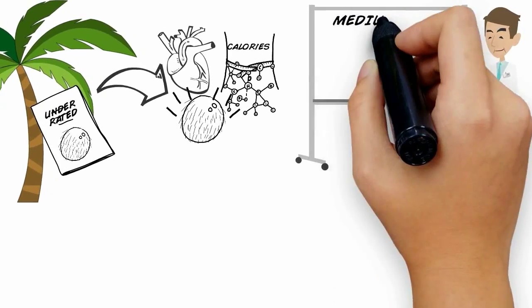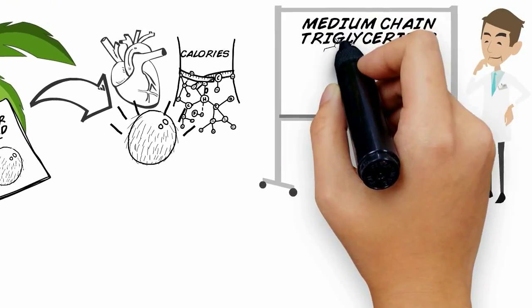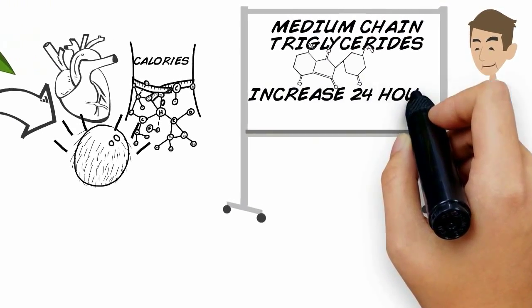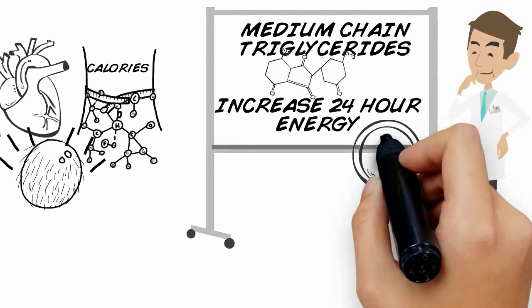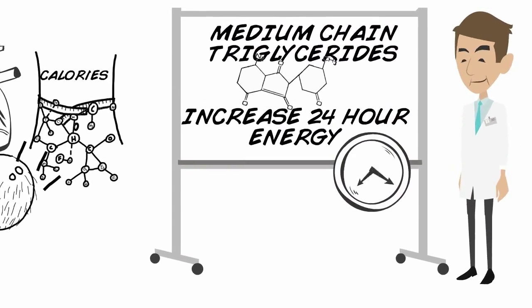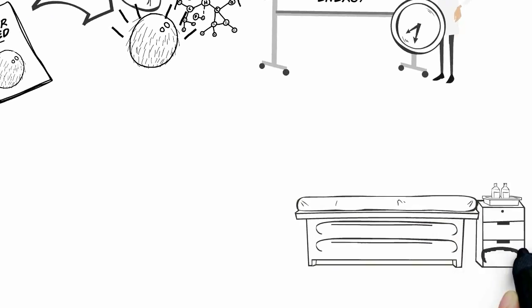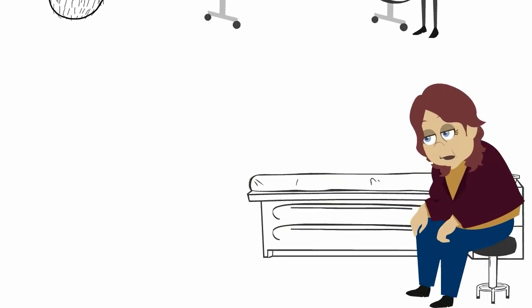In simple talk, the medium-chain triglycerides in coconut oil have been shown to increase 24-hour energy expenditure by as much as 5%. What that means to you is you don't feel jumpy, jittery, or nauseous. It's completely healthy.